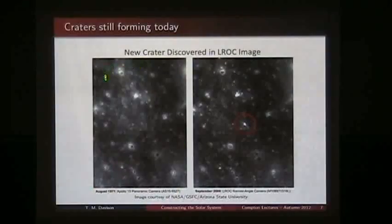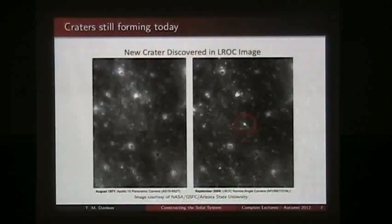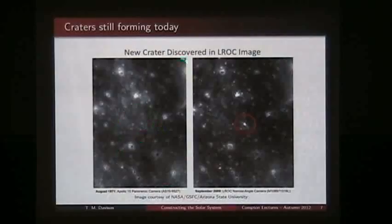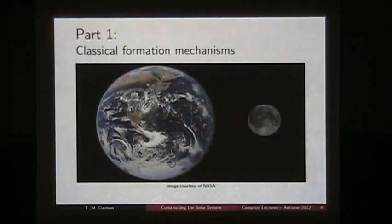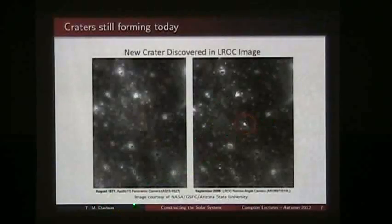This image was taken by Apollo 15 back in 1971, and you can see the evidence of lots of craters on the surface. If we look at this same region again with a photo taken in 2009, you can see this crater here, circled in red — this bright spot — doesn't exist in the image from 1971. So this is a great example of cratering still occurring on the moon. This crater formed sometime in the last 41 years; we don't know exactly when.